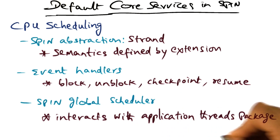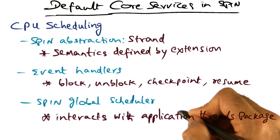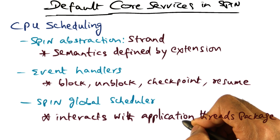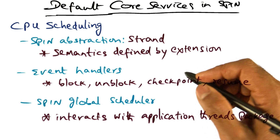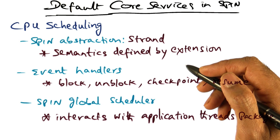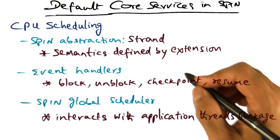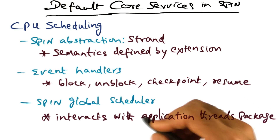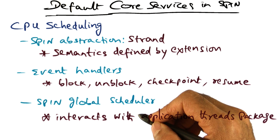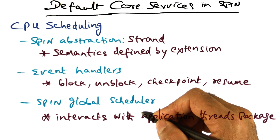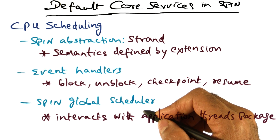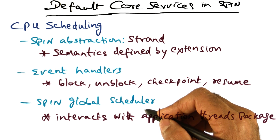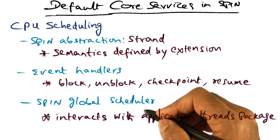The global scheduler interacts with the application threads package. An application is a loose term here — it is the extension living on top of Spin, which may be an entire operating system or just an application. For example, if we are running Linux and Vista as two extensions on top of Spin, each may be given a particular time slice, say of x milliseconds. How each extension uses that time for scheduling user-level processes running inside those operating systems is entirely up to those extensions.